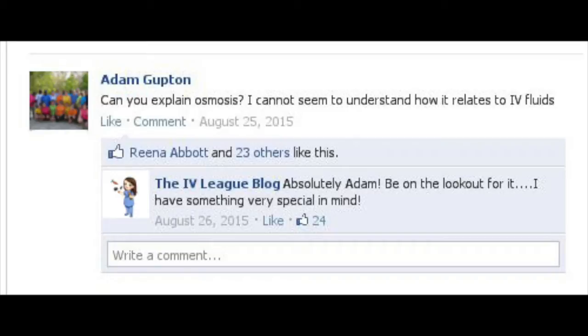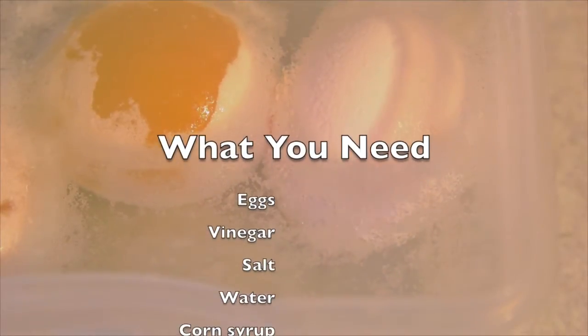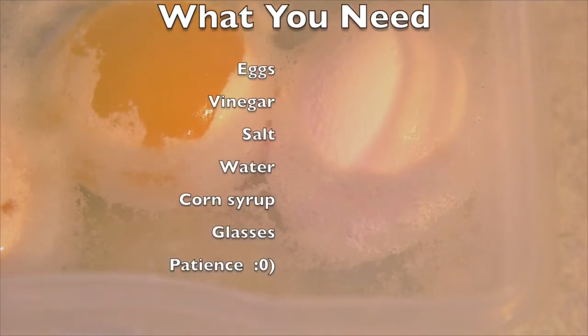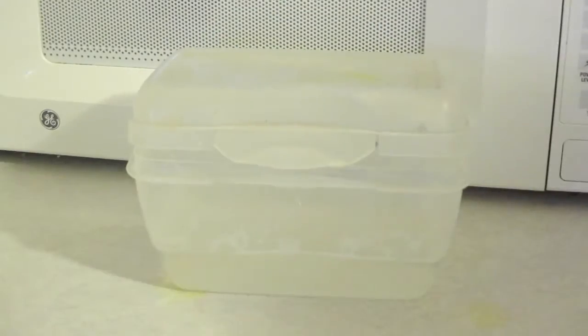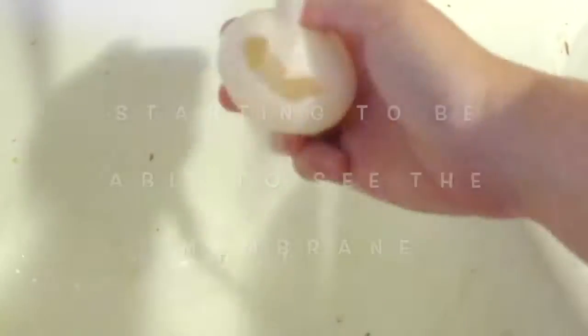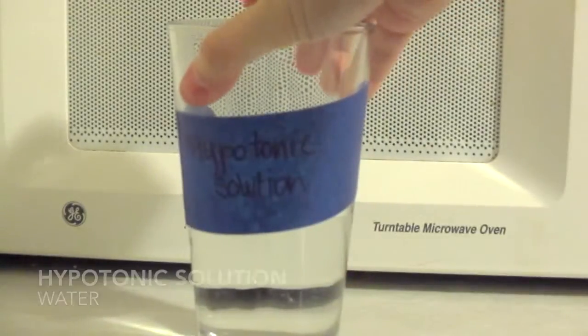Today we're going to use an egg and do something completely unexpected with it to demonstrate osmosis. You're going to start out by preparing your eggs. You're going to put them in vinegar and acetic acid from the vinegar is going to interact with the calcium in the shell and you will just be able to rub it off as you can see here. Once you get that completely off, it'll take about 24 hours, then you can prepare your solutions.